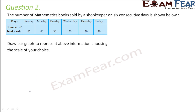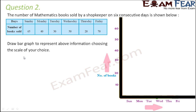Question number two: the number of mathematics books sold by a shopkeeper on six consecutive days is shown below. Draw a bar graph to represent the above information, choosing a scale of your choice. First, we draw a horizontal axis and a vertical axis. On the horizontal axis we consider the days, and on the vertical axis we consider the number of books.